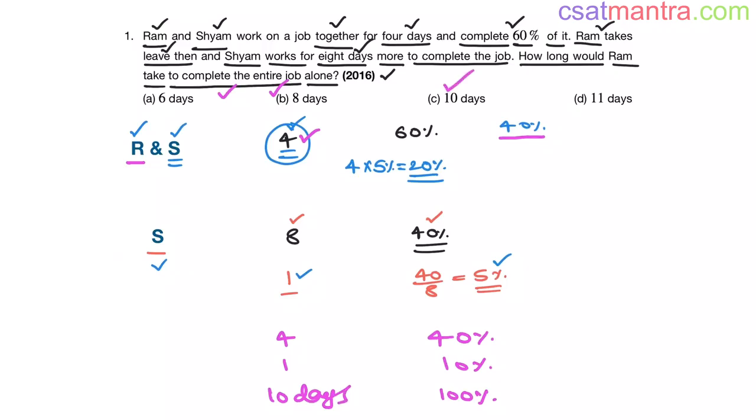Time and work problems are general in nature. Just applying common sense, you can solve them. See, 60% of the work is done by Ram and Shyam in 4 days. Now, 40% of the work is left. Shyam completes that 40% in 8 days, which means he completes 5% of the work in 1 day.